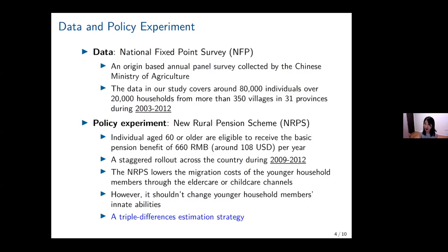More importantly, we argue that the cash transfers received by the elderly should not affect the ability of younger household members and, as a result, should not affect the potential earnings they can get from the two sectors. For estimation, we use a triple differences strategy. The first two differences rely on the staggered implementation of the pension plan, and for the third difference, we compare individuals living with an elderly person aged 60 or above versus those living without an elderly person eligible for pension benefits.